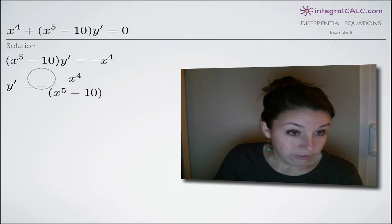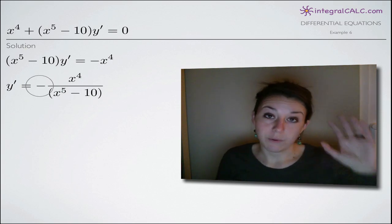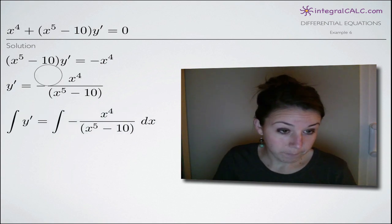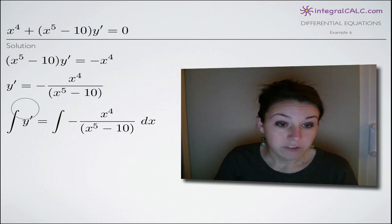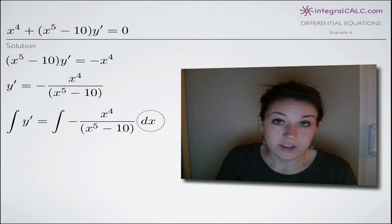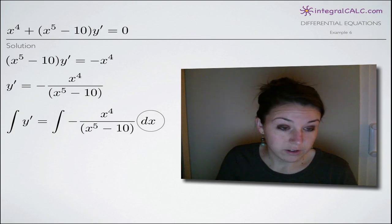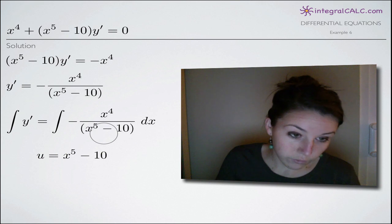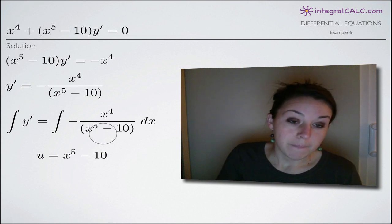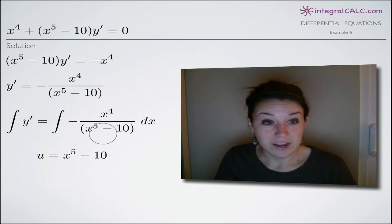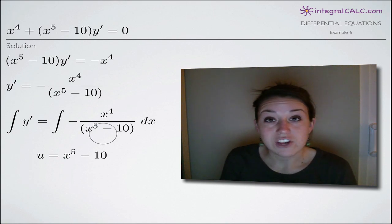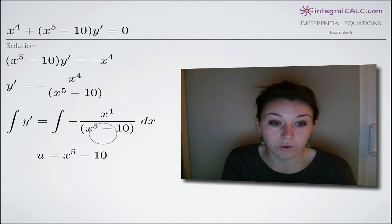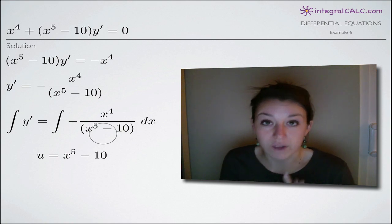Don't forget your negative sign out here in front. Now that we've separated our variables — y's on the left and x's on the right — we'll go ahead and integrate both sides. We add the integral symbol to both sides and dx to indicate integral notation. The left side is easy to deal with; we're going to end up with y equals. The right side, we have to use u-substitution to integrate negative x to the 4th over x to the 5th minus 10.